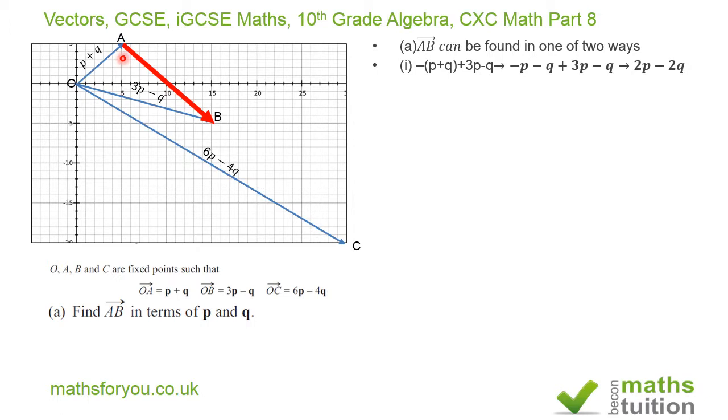I have to go from A to O and then from O to B. Because I'm going against the arrow, it's minus P plus Q, then plus 3P minus Q. When you simplify, you end up with 2P minus 2Q, and when you factorize you get 2(P minus Q).